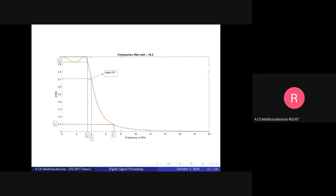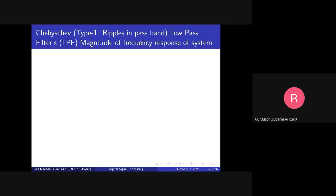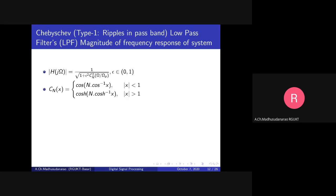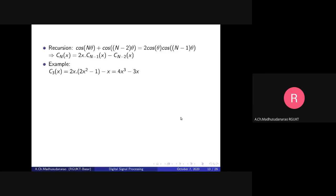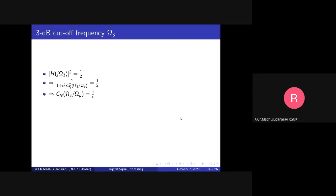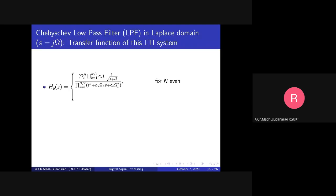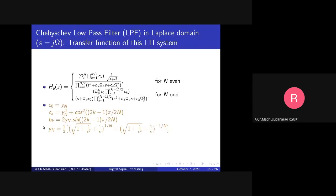The design complexity of Chebyshev filters is a bit higher than Butterworth filters mathematically. The transfer function of the Chebyshev Type 1 low-pass filter has unknown parameters ε (epsilon) and n. If you know ε and n, you can obtain the transfer function.